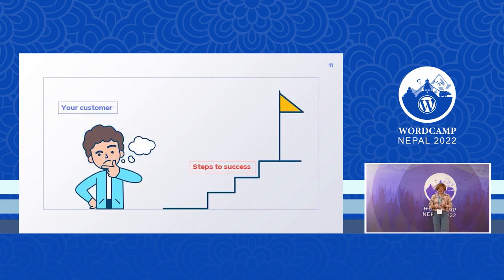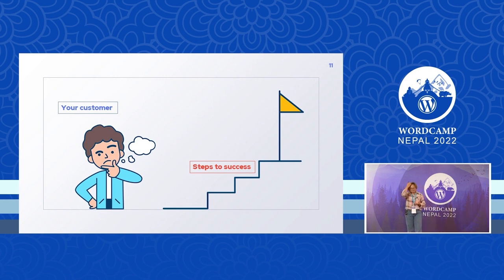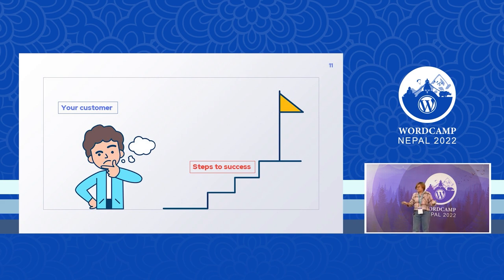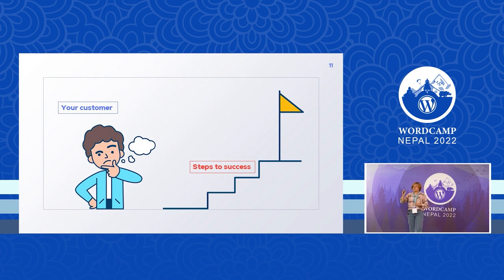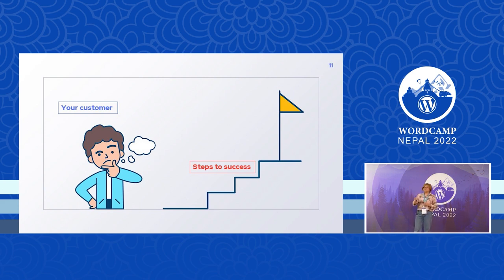Here is an illustration. You see a person who looks quite confused and worried — that's your customer. They found your product, purchased it, but may be thinking: what should I do next, or how can I use the product, or will the product actually solve my problem? On the other side you can see a golden victory flag with steps — those are the steps your customer must take to be successful. That is where you as a product vendor must help your customers pass through.